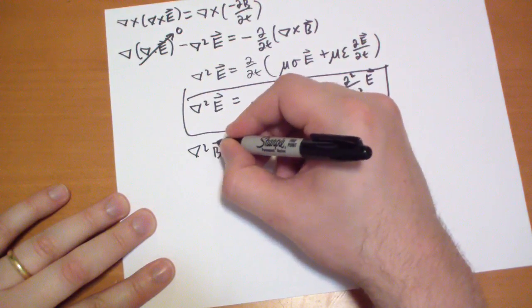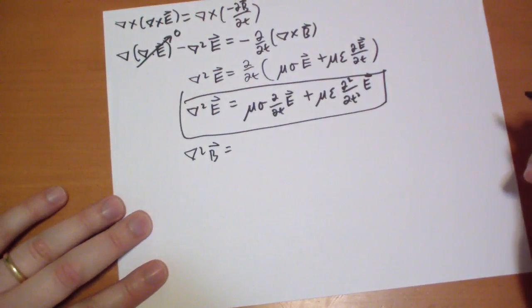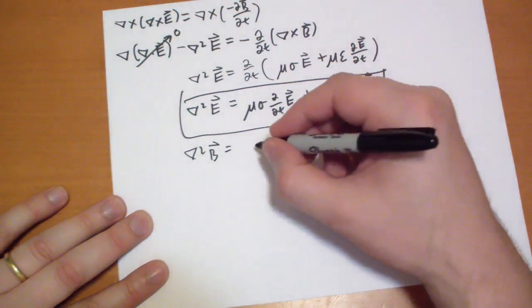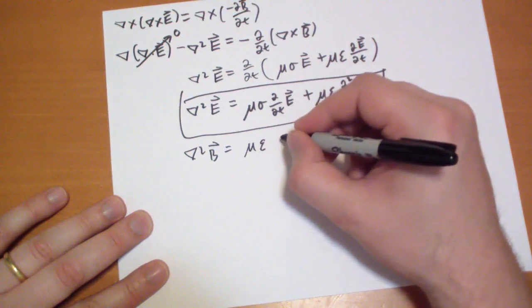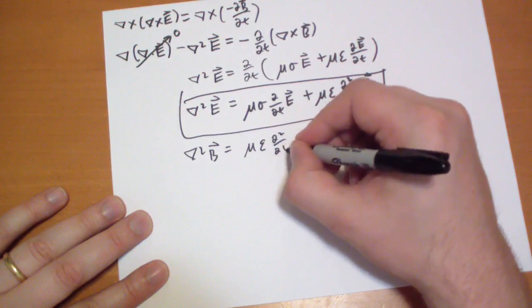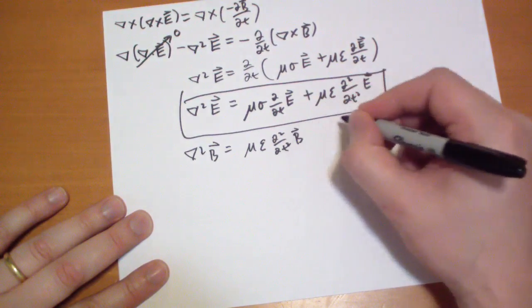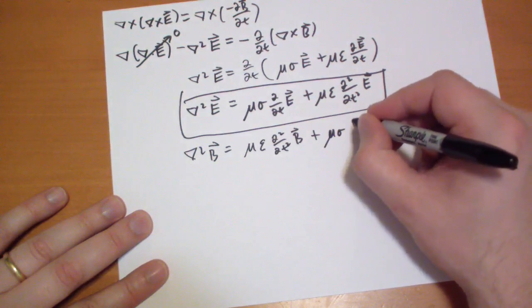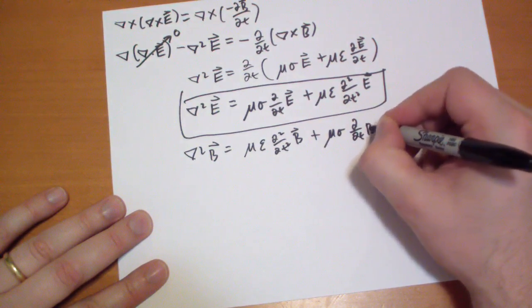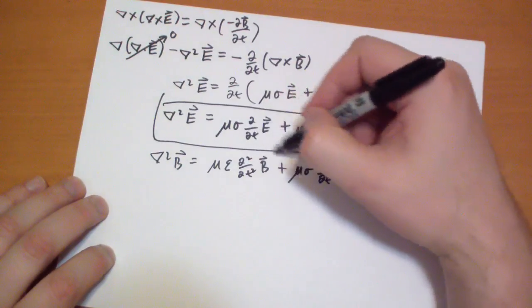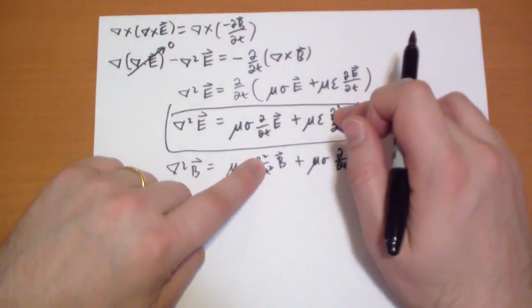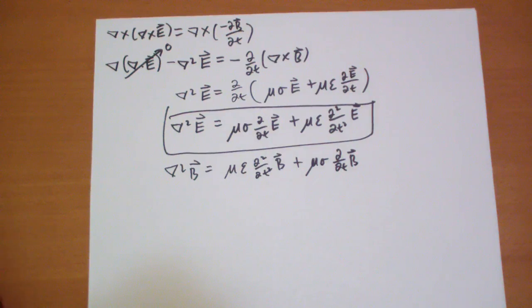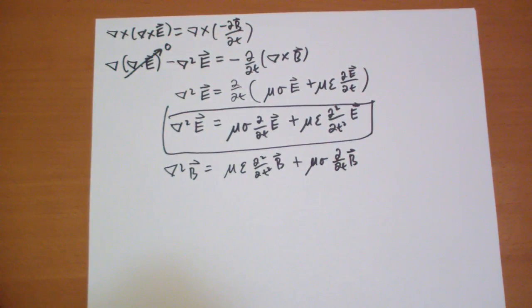the Laplacian of the B field would be mu epsilon... sorry put things backwards mu sigma... basically I wrote the terms backwards so the d squared terms are here and then the single terms are there. So we could write the wave equation and then introduce that decay term or we could just write it out this way.